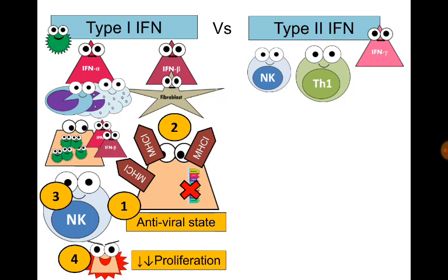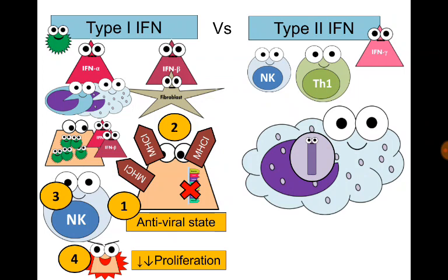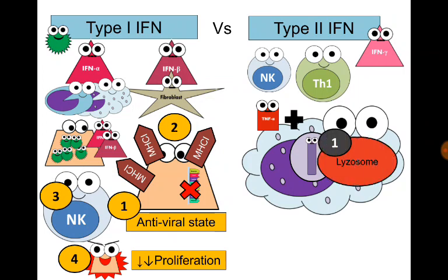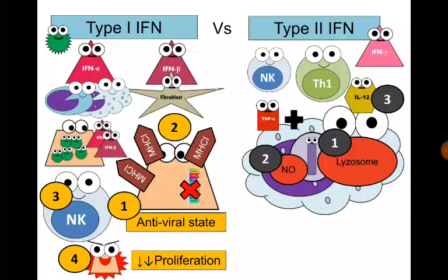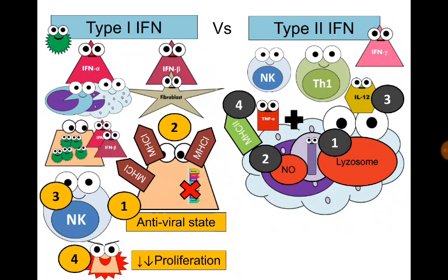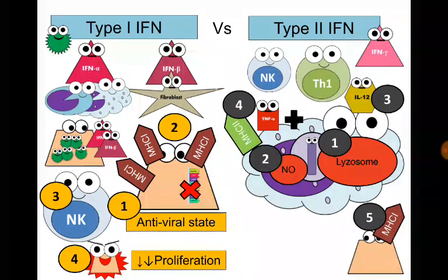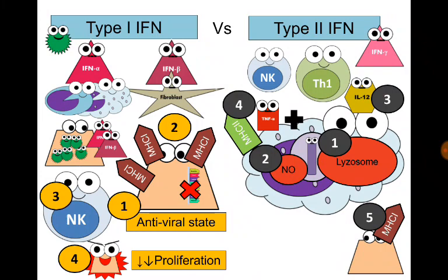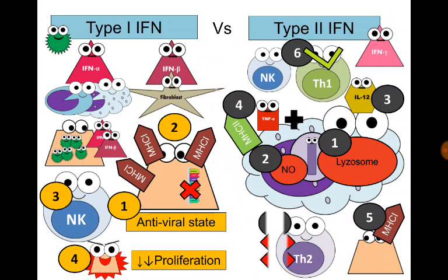Interferon gamma is produced mainly by the T helper 1 cell and also by the natural killer cell. Its main function is activating and helping macrophages. It synergizes with tumor necrosis factor alpha to help the fusion of lysosomal enzymes with the phagosome containing the organism, and produces lethal nitric oxide. It also stimulates macrophages to secrete interleukin-12, which stimulates T helper 1 cells to produce more interferon gamma. It increases expression of MHC class 2 molecules on macrophages and MHC class 1 molecules on cell surfaces. It promotes T helper 1 response, inhibits T helper 2 response, and activates natural killer cells.